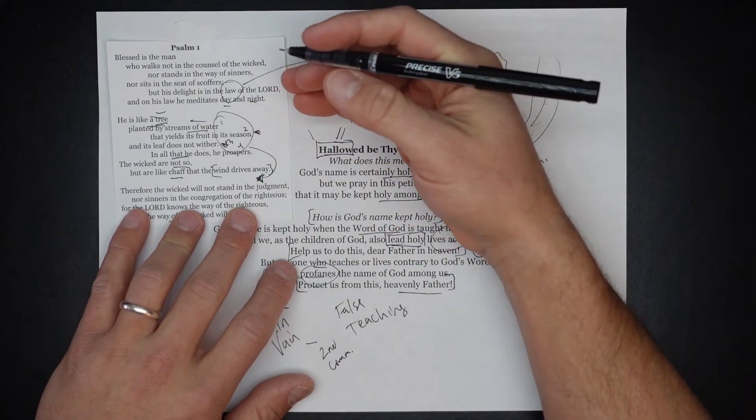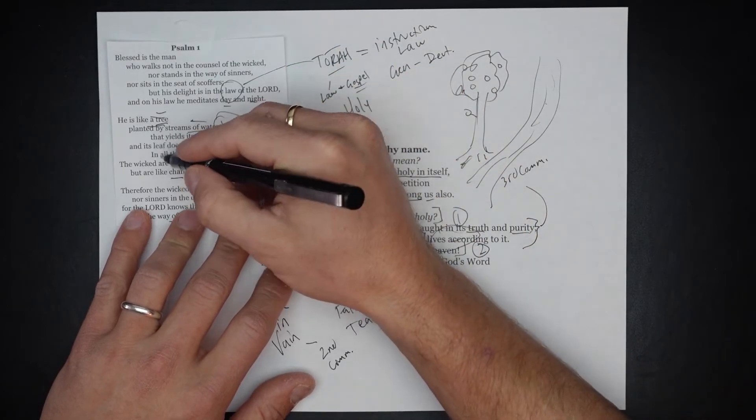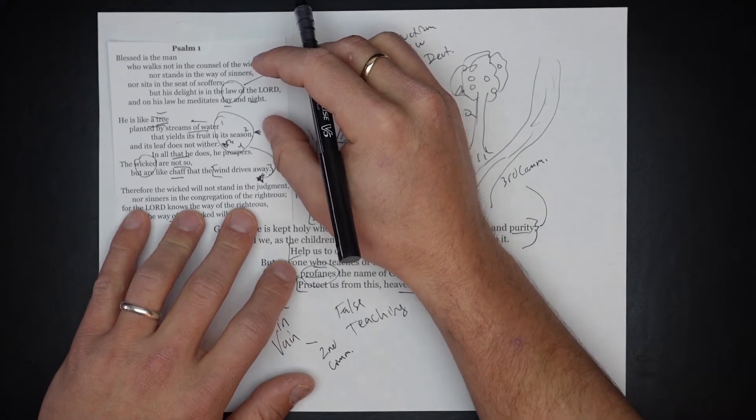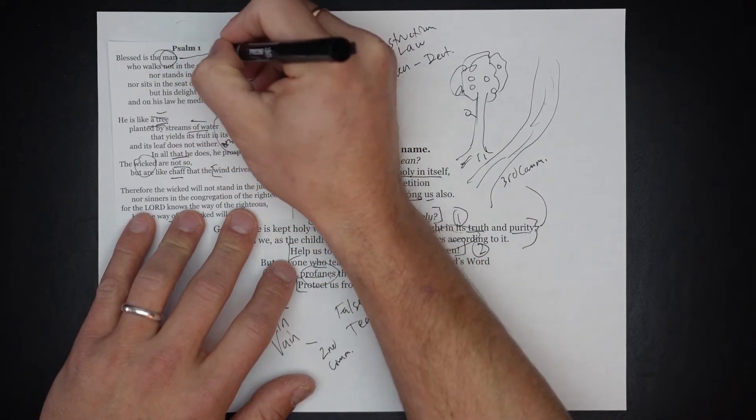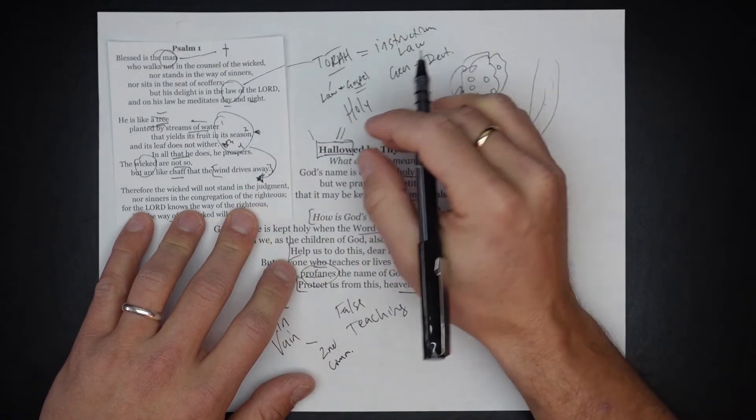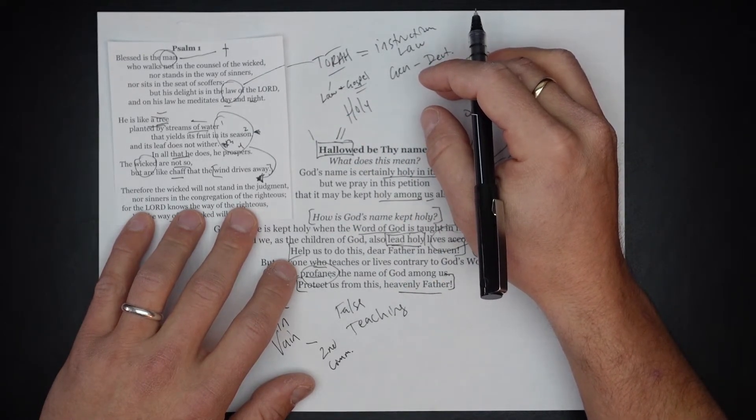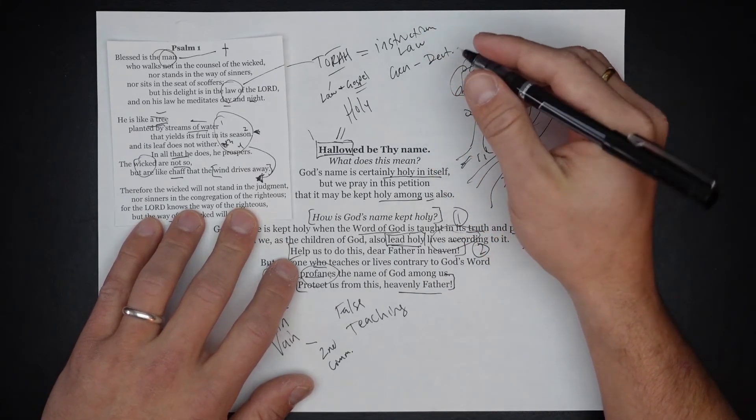Now I want to be the good man, this is most certainly true, but it is absolutely true also that I am among the ranks of the wicked. I am sinful and unclean. And so the good man can only be one man, Jesus. He is the one who delights perfectly day and night on the Torah, the instruction, the law and gospel of the Lord. He has brought me to himself through the same word, and this is what makes all this work.